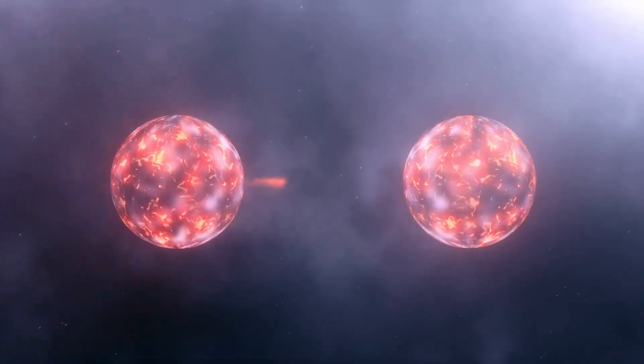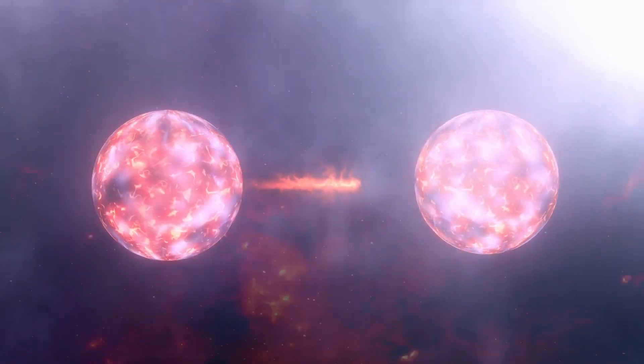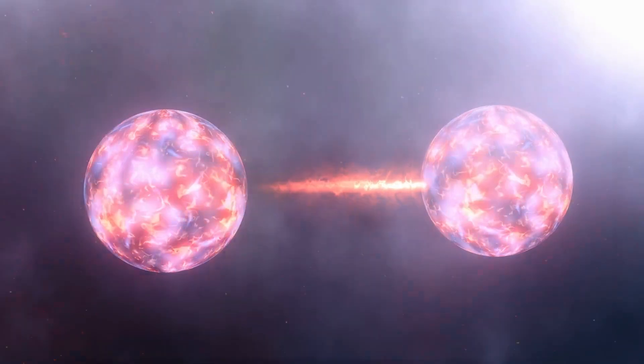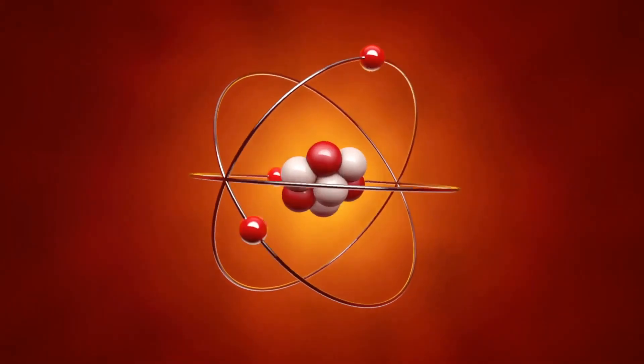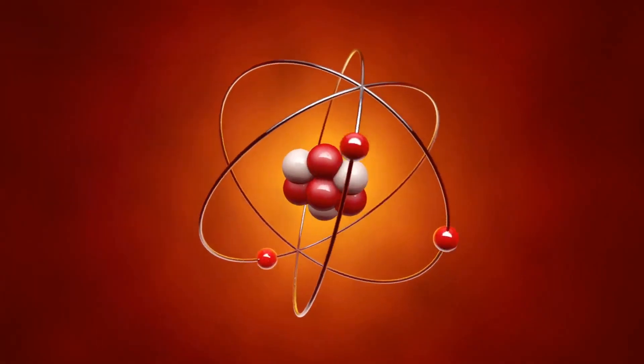When particles interact, they do so as whole entities, not as composites of smaller parts. This is unlike atoms, which can lose or gain electrons, or be split into protons, neutrons and electrons.